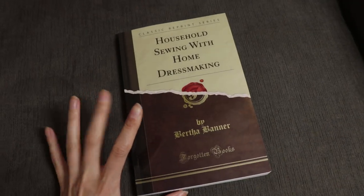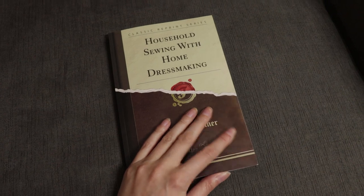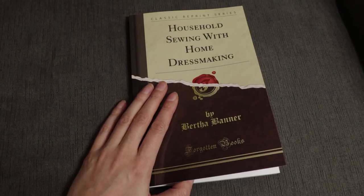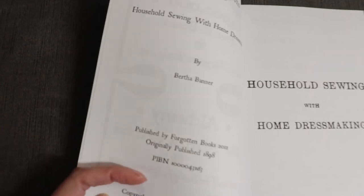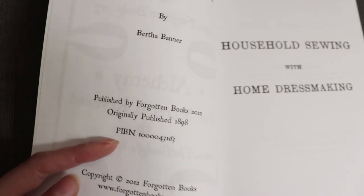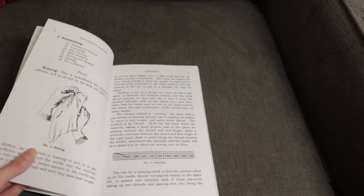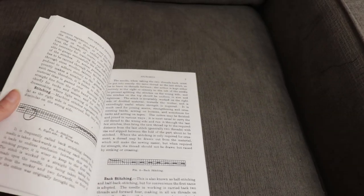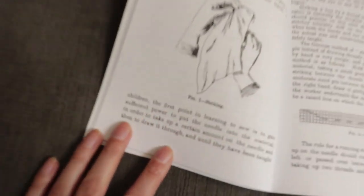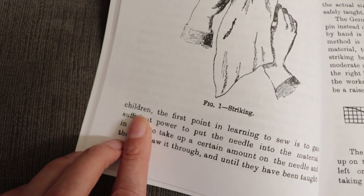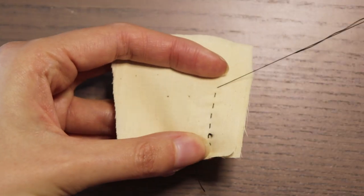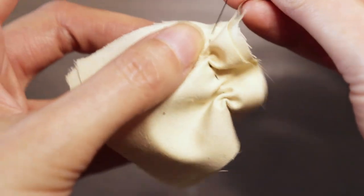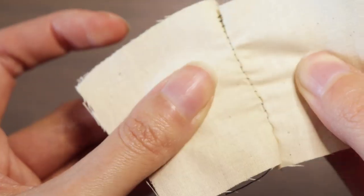Okay, let's get real. I don't know what I'm doing, so I need to learn how to sew. This is the Household Sewing with Home Dressmaking by Bertha Banner, and it is also available online. This book was published in 1898. I went through here and I read the whole section on stitches. We learn about the running stitch. And by the way guys, this book is for children.